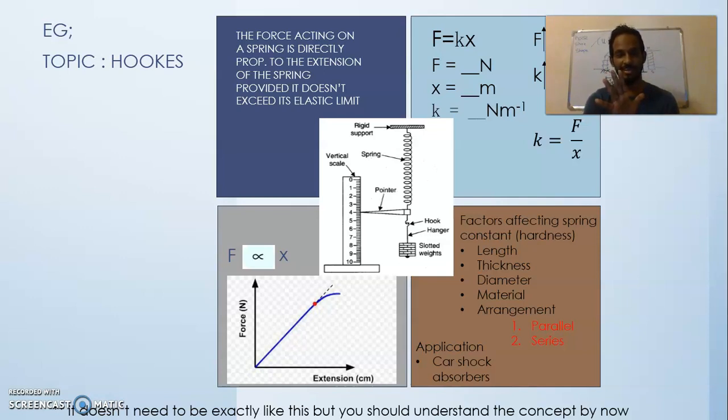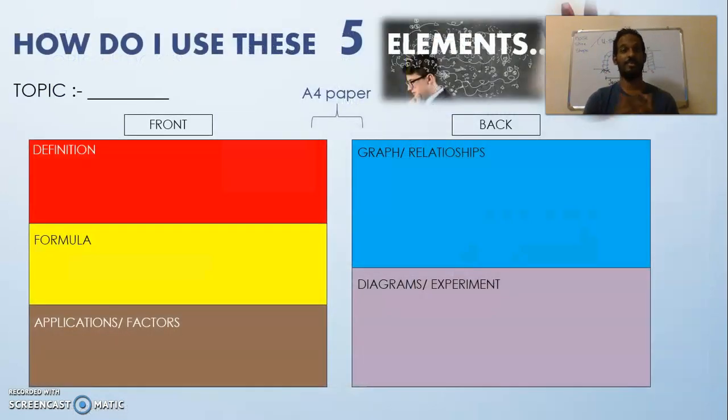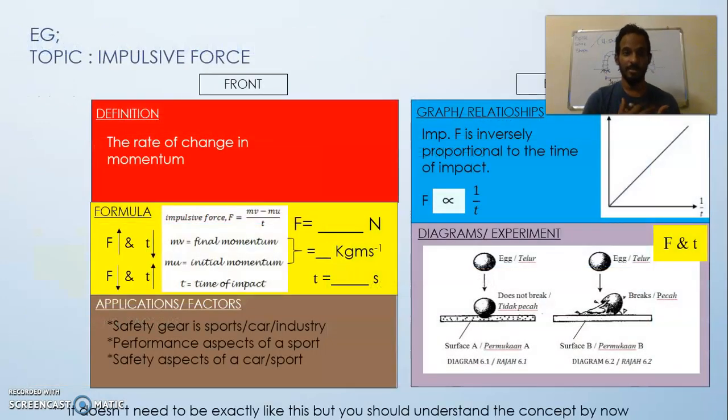It's basically an A4 paper broken into five parts, and these are the main elements. I got another example. This is another example that you could use: you can take an A4 paper, basically you got the front part and the back part. You can take the front part and break it into the same five things—the definition, formula, and application factors on the front side—and on the behind side of it you can basically put the graph relationships and then your diagrams and experiment.